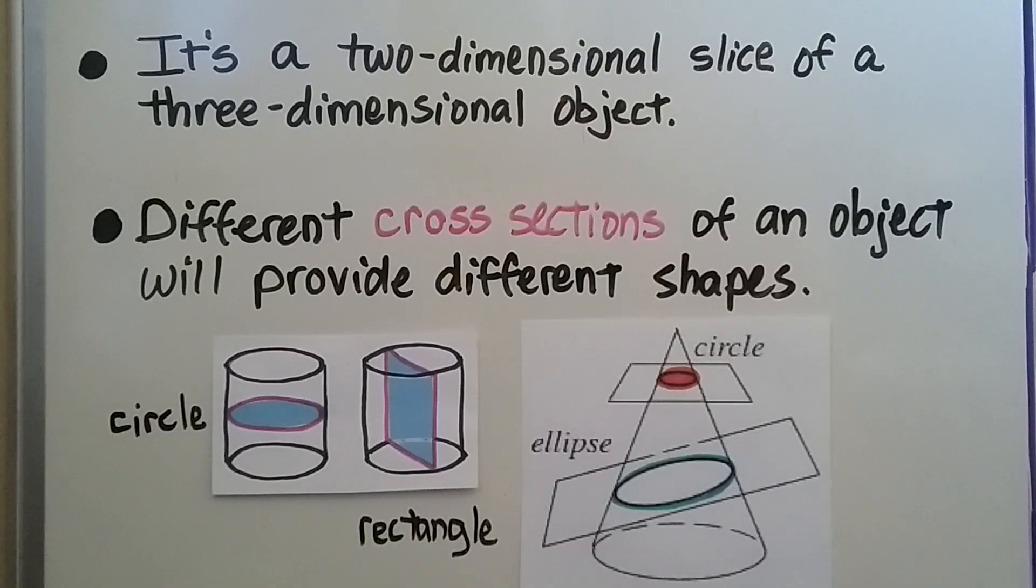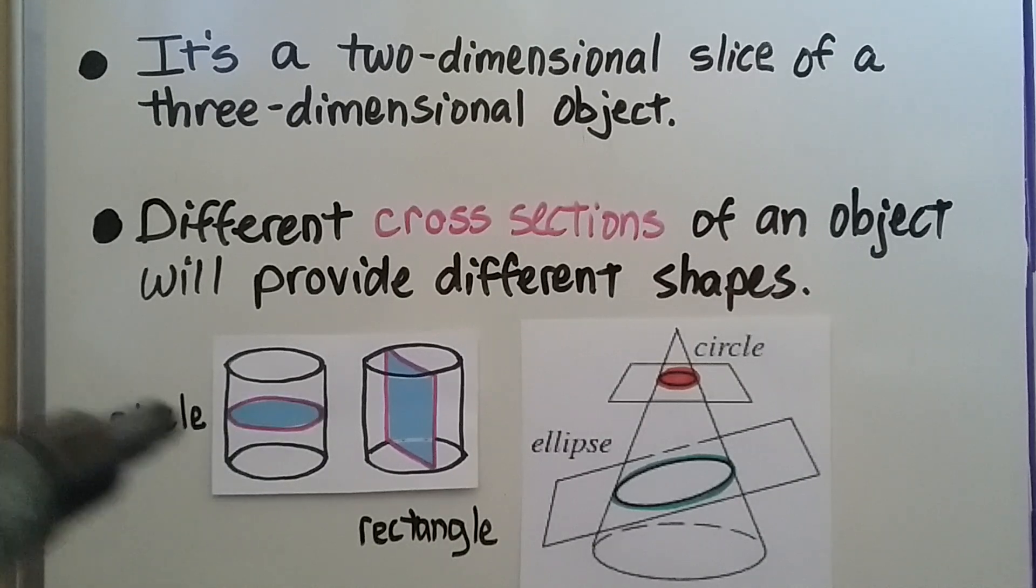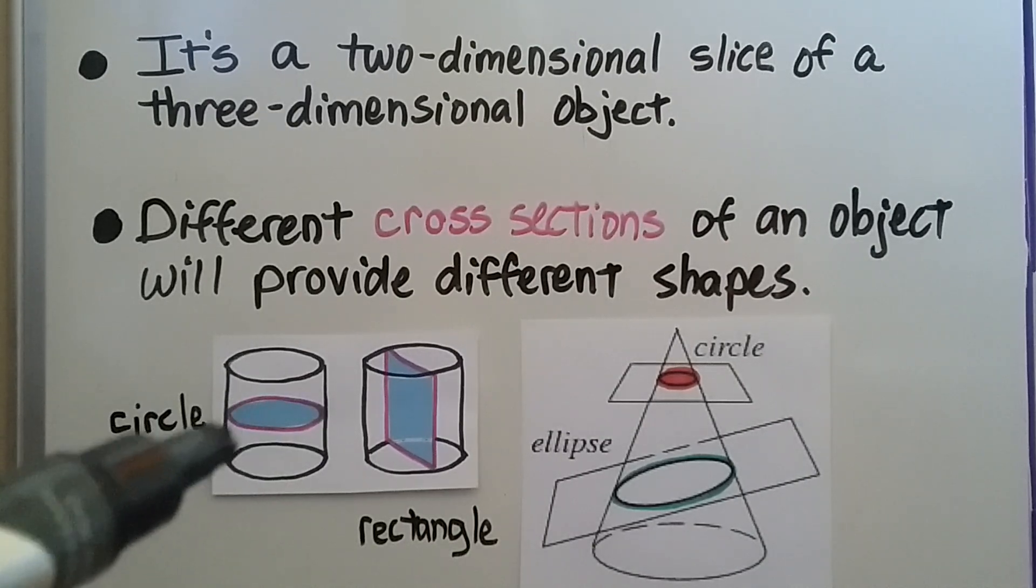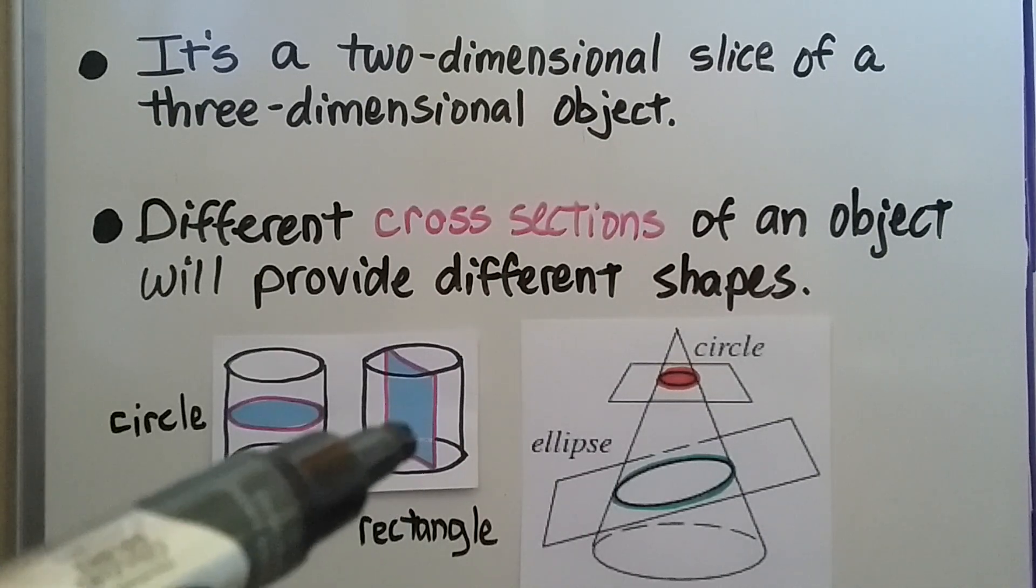It's a two-dimensional slice of a three-dimensional object and different cross sections of an object will provide different shapes. So if we cut this cylinder parallel to the base, we'll get a circle, but if we cut it going perpendicular, we'll get a rectangle.